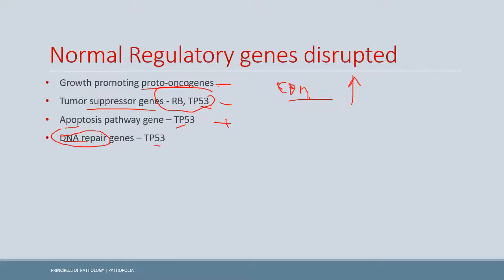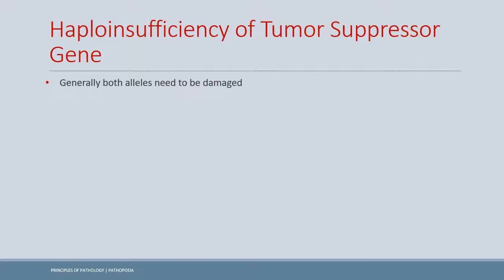Generally, a mutation should affect both alleles to show its phenotypic effect. However, in haploinsufficiency, only one allele is damaged and we still see tumor formation. This haploinsufficiency phenomenon is also important in some other genetic diseases.